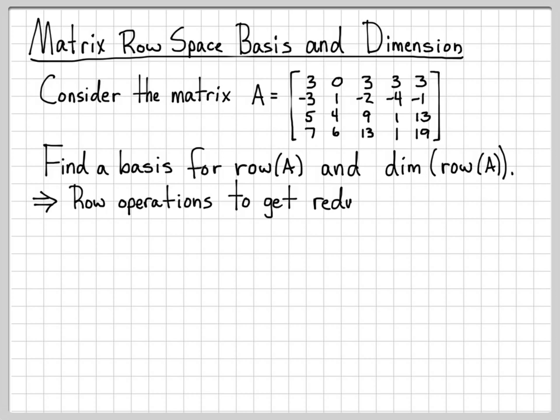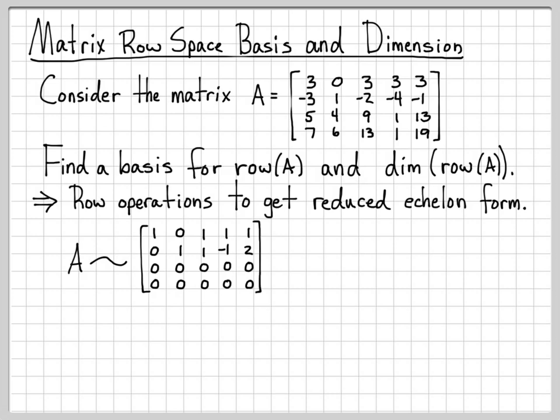What it boils down, again, is finding a reduced echelon form of the matrix. And from the last video, we know that this matrix A reduces to a matrix that looks like this.